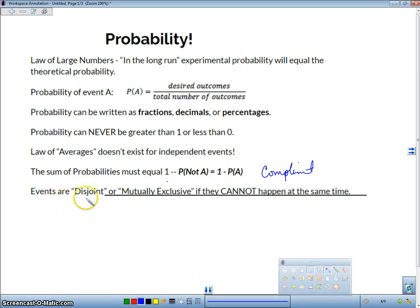Lastly, two events are called disjoint or mutually exclusive if they can't happen at the same time. So basically, if I can't get a heads and roll a six with a coin, they're called mutually exclusive. So if I can't get it at the same time, then it's mutually exclusive. Let's take a look at some examples of it.